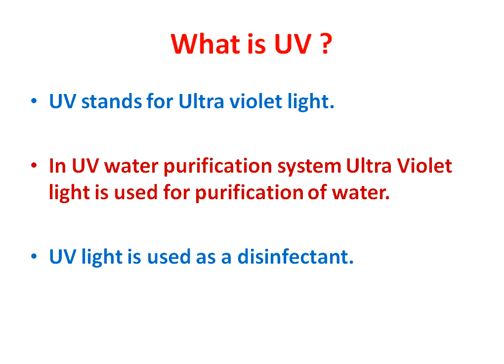Chlorine gas is used as a disinfectant, and ozone gas is also used as a disinfectant for industrial applications. The function of UV light is that it acts as a disinfectant which kills microorganisms present in water.